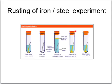The fourth and fifth pictures illustrate some of the things which make rusting worse. In the fourth picture, we have the steel nail in contact with salty water and air, and in the fifth one with acid rain and air.